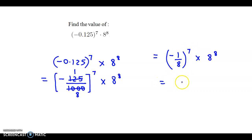Now minus 1 upon 8 raised to 7, and we could split 8 raised to 8 as 8 raised to 7 times 8 raised to 1. Now 8 raised to 7 cancels with 8 raised to 7. So we have minus 1 times 8. The final answer is negative 8.